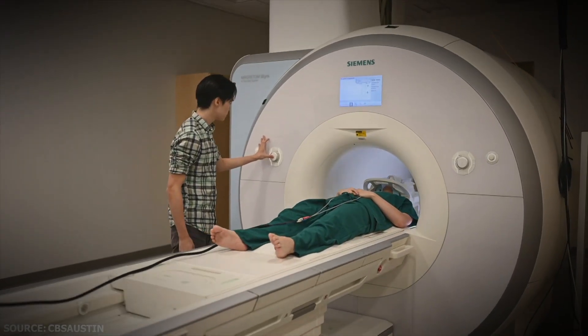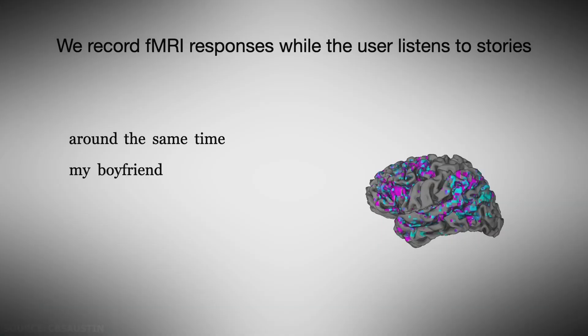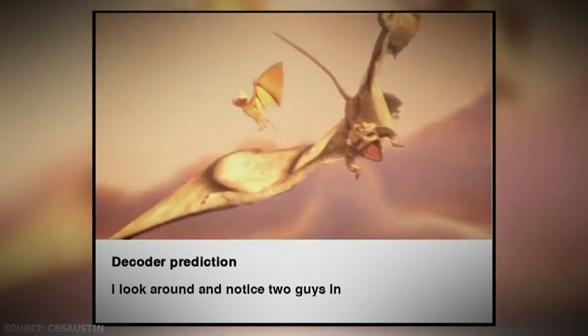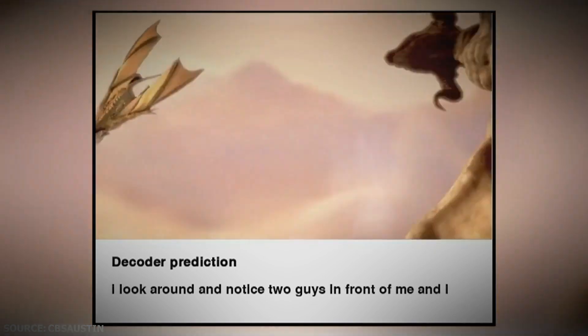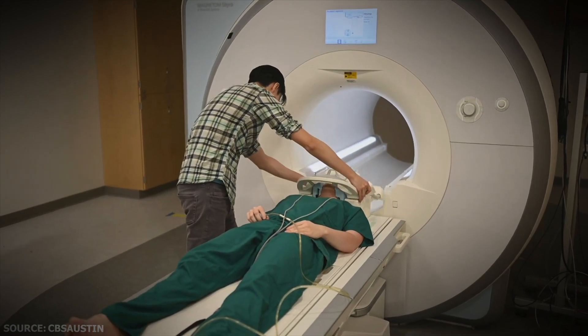The device is called a semantic decoder and works by analyzing non-invasive brain recordings through functional magnetic resonance imaging. The decoder reconstructs what a person perceives or imagines into continuous natural language. The researchers found that their decoder could be trained to reconstruct continuous language, including the general gist of stories, and in some cases, exact words and phrases.